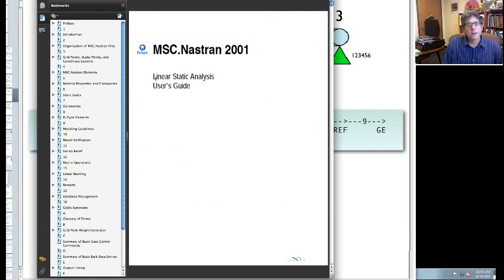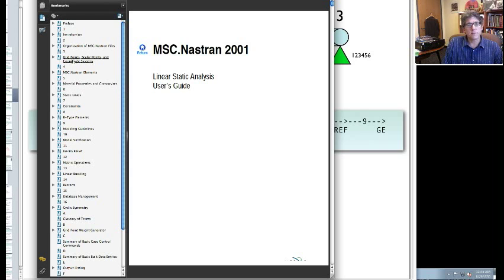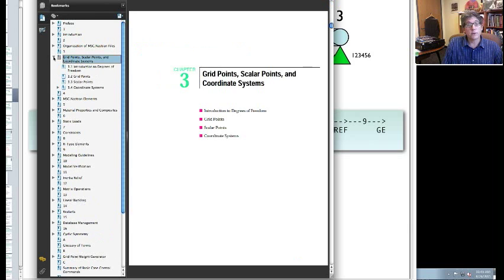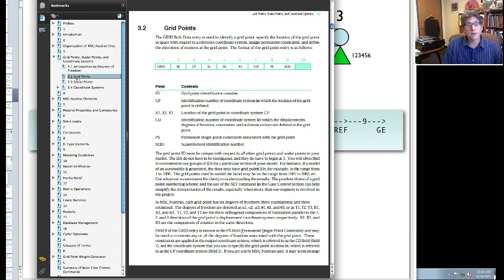I mentioned it in class a couple times, but you need to start looking at the linear static analysis user's guide. This really is the reference for writing these input files. So if you look at this PDF file, you can see most of the things we're looking at here. Say for example, you forget the card format for a grid point. Well, you can go right under here, under grid points, and it'll show you those fields. So here are the fields, and it gives you the definition of what each one of those things are. For example, x1, x2, x3. Those are the locations of the grid points in the coordinate system.